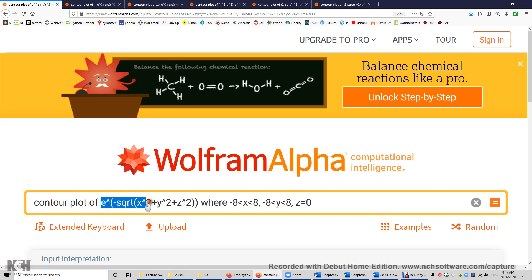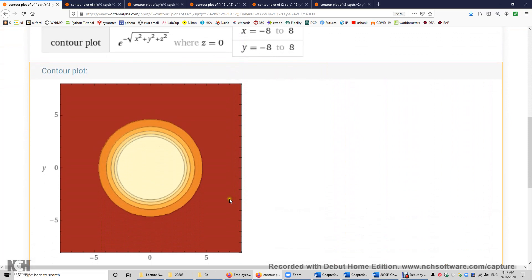Now you're looking at this 1s orbital in the hydrogen atom, e to the power of negative r. r is the square root of x squared plus y squared plus z squared. I'm making a contour plot by setting z to 0. So now you're looking at this. And this is a function, e to the power of negative r. r is the square root of x squared plus y squared plus z squared.